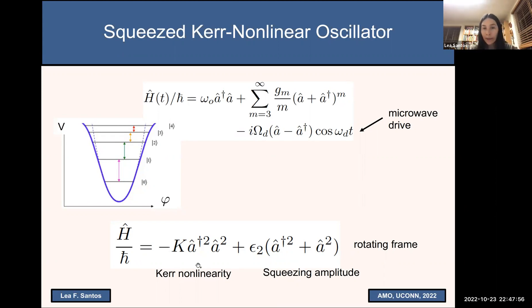So K here is the Kerr nonlinearity that we mentioned, and this is the drive, is what we have from this additional drive. And so this epsilon 2 is the squeezing amplitude. This is the Hamiltonian that we'll be dealing with. So we reached the point where we explained the last term of the title of this work, squeezed Kerr nonlinear oscillator. And this is the end of the second part of this presentation.